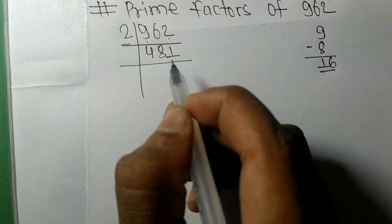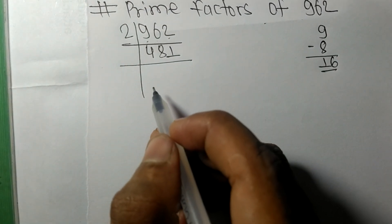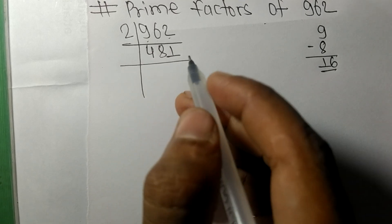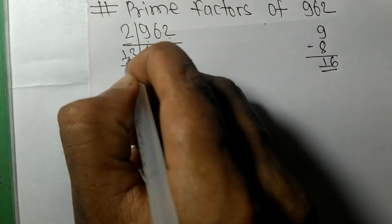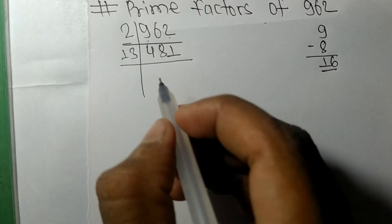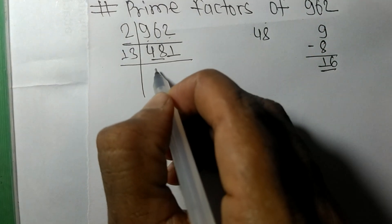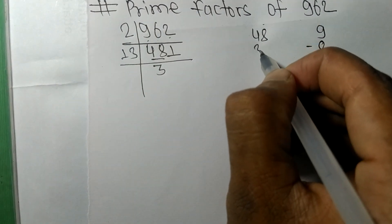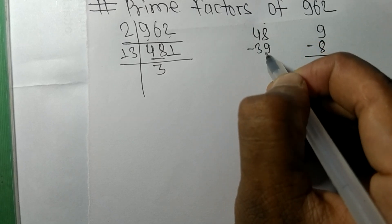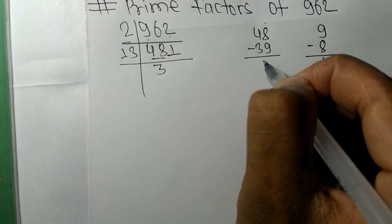We have 48. 13 times 3 means 39. On subtracting we get 9.